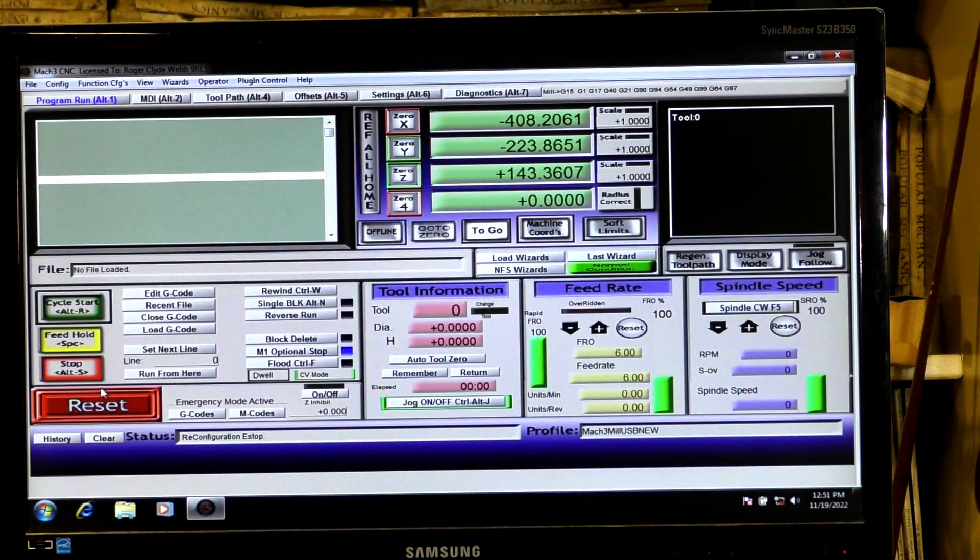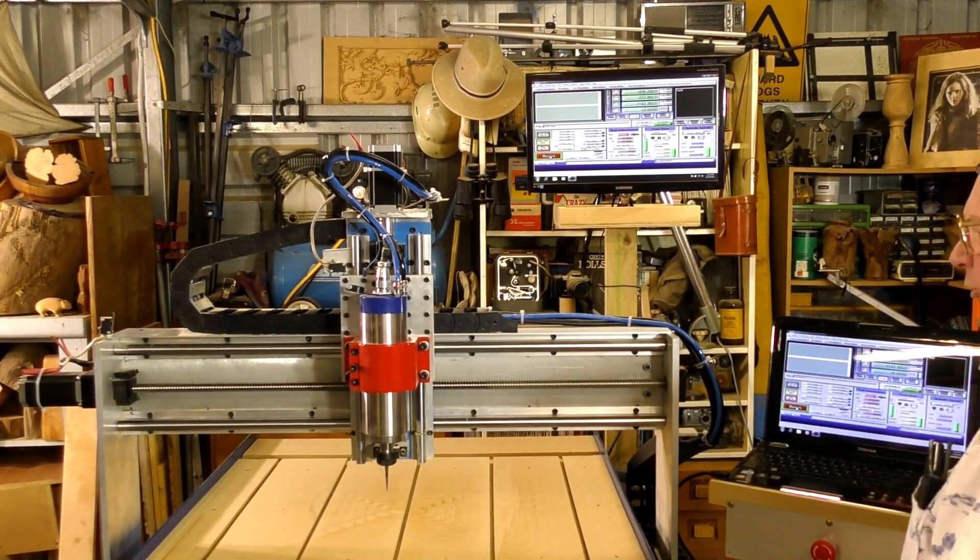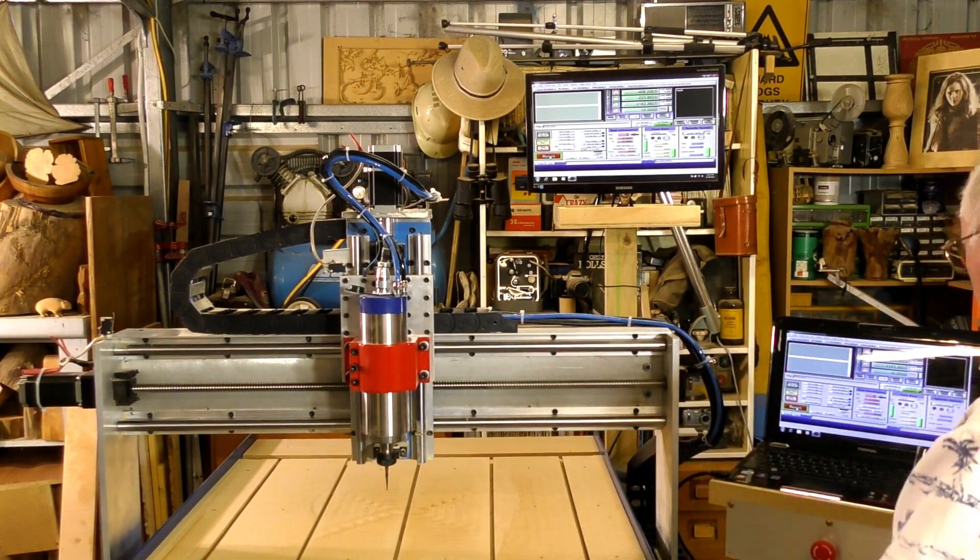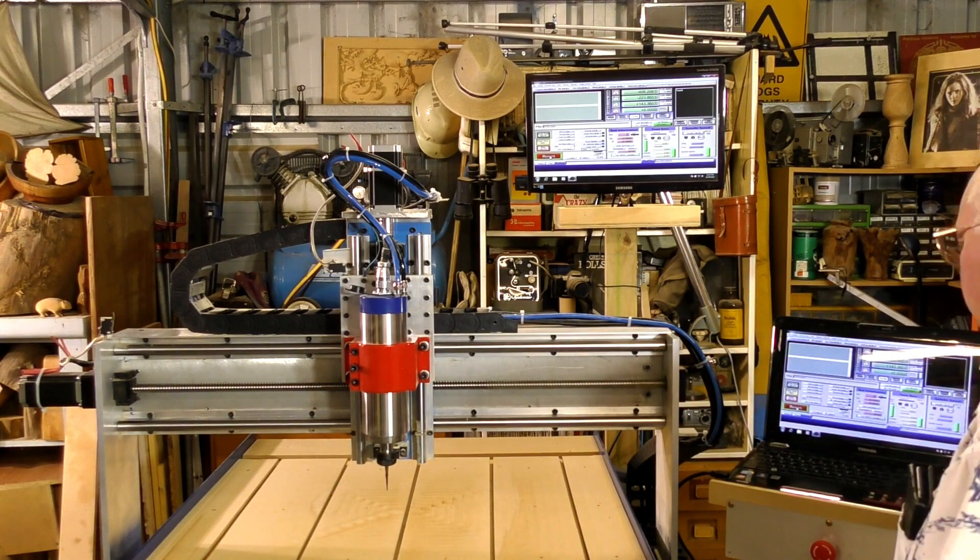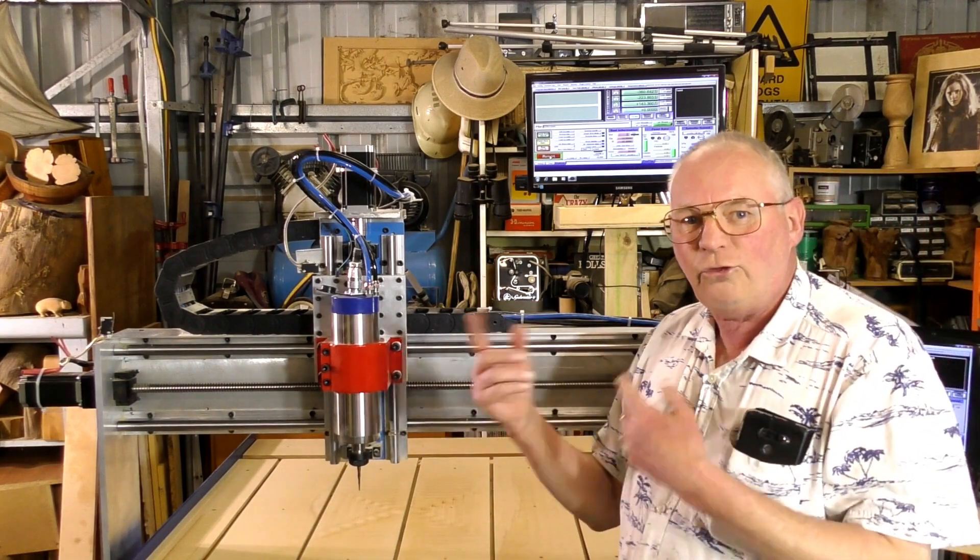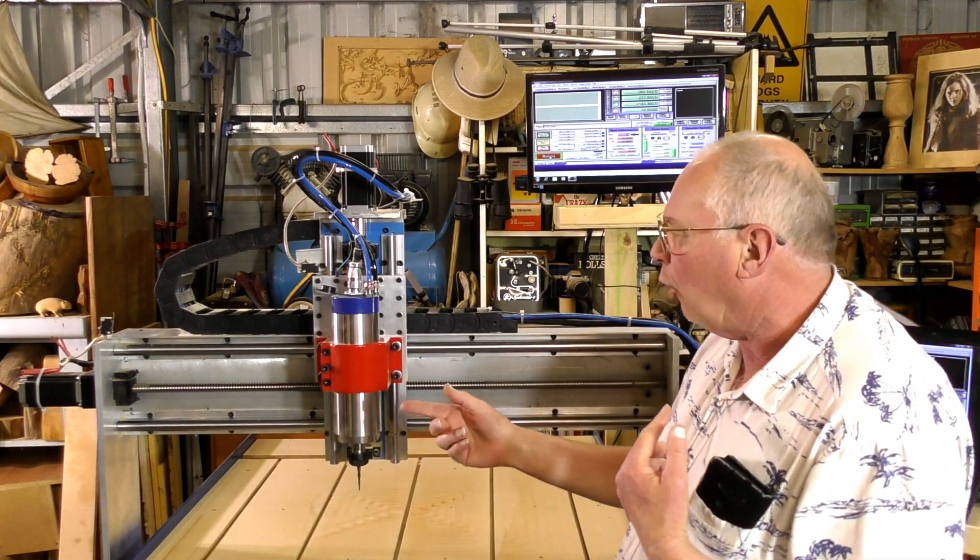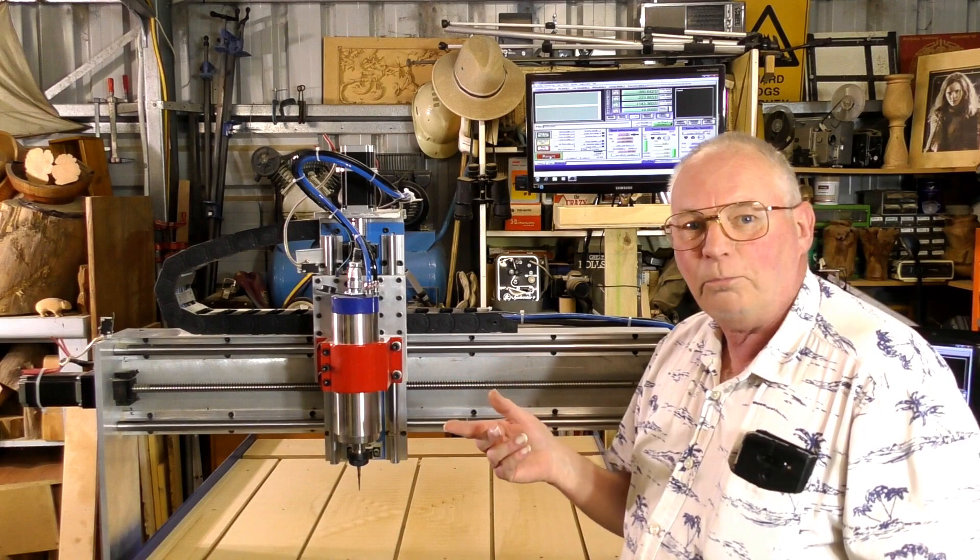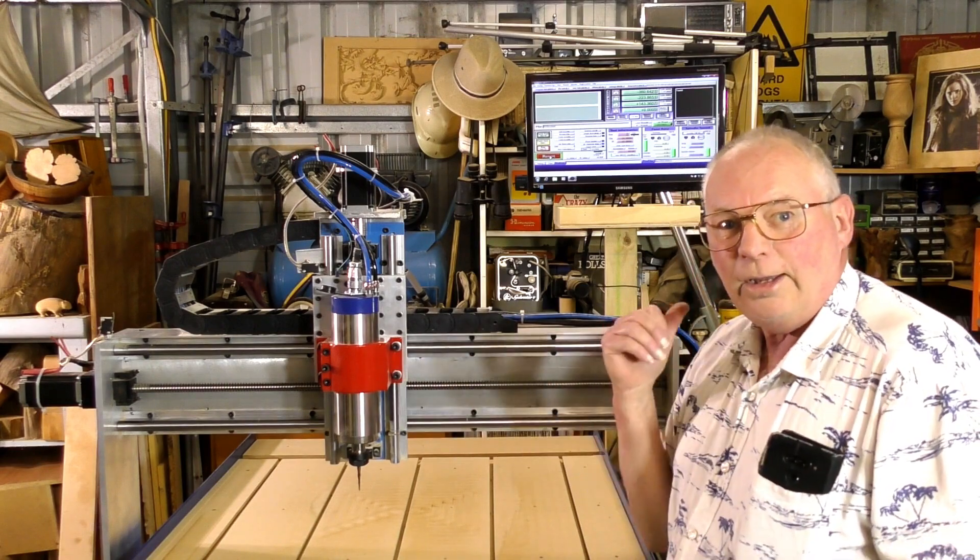And I'll show you the result of that. So I'm pressing the 6, which it should come this way, and of course it goes the opposite direction. So that's how to change the axes direction, just with a simple tick or cross in Mach 3.